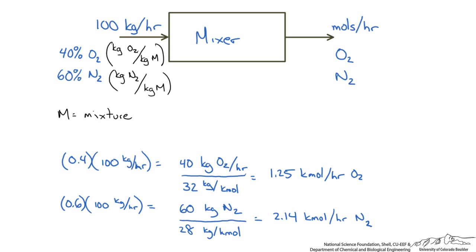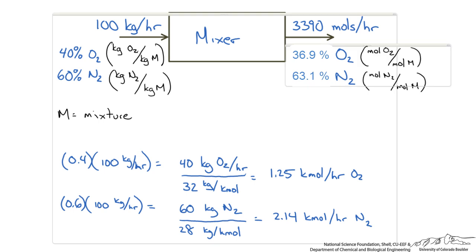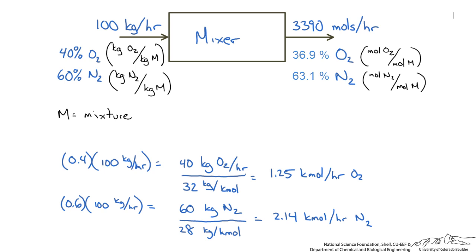You would add these two together and we would have a total flow rate of 3390 moles per hour. We would still have to calculate what the composition of O2 and N2 would be, so we take each of them and divide by the total to get the molar percentages. Since we have done it in moles it is important to write out the units, and we have our final solution where we have calculated the total moles and molar composition of both oxygen and nitrogen.